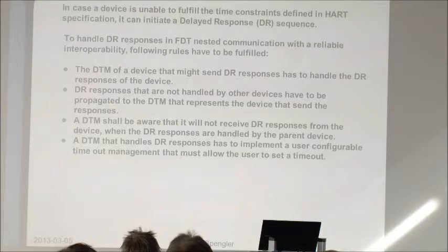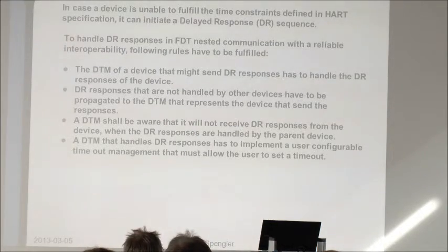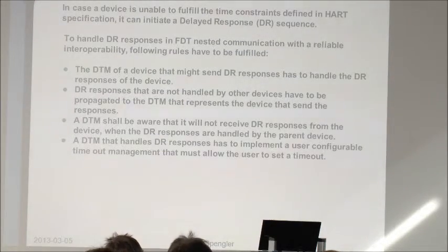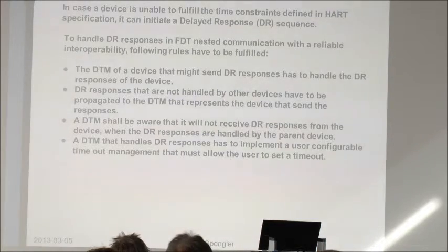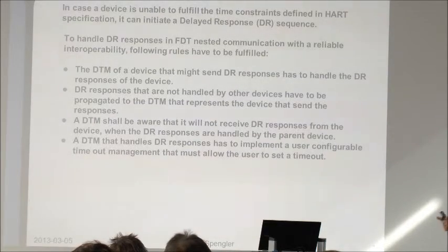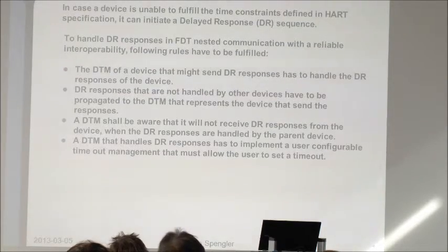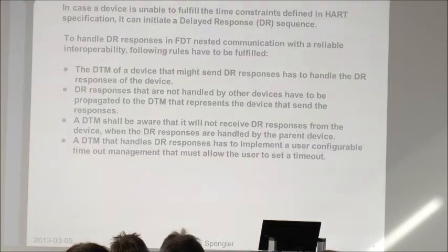For example, it could make a later request. It could also be possible that a gateway device in the middle can handle this, and then a device DTM from the device which sent the delayed response will not see the delayed response, because it is handled at the earlier stage in the gateway DTM. So you cannot be sure that you will get this delayed response.